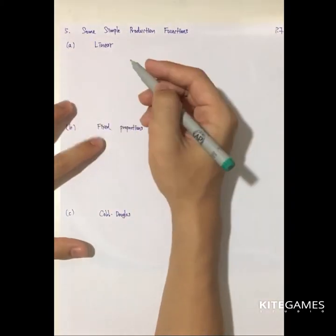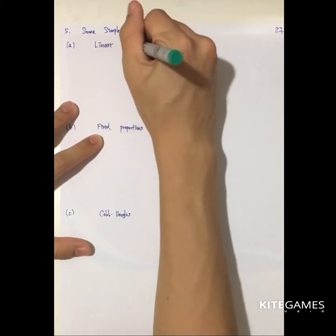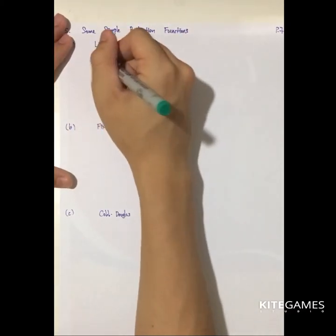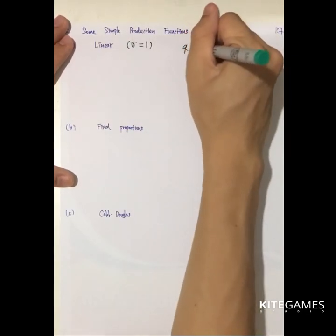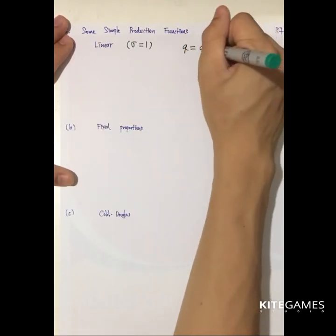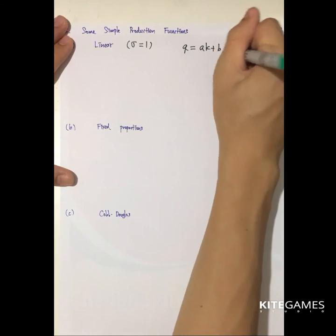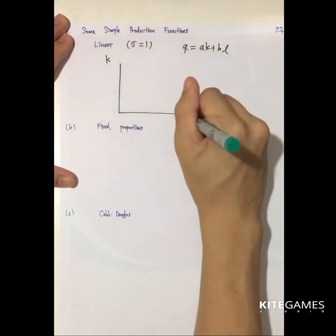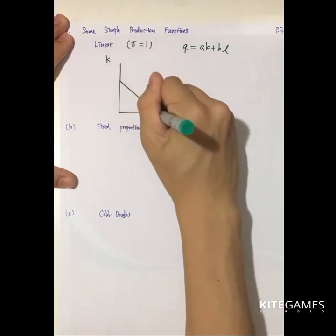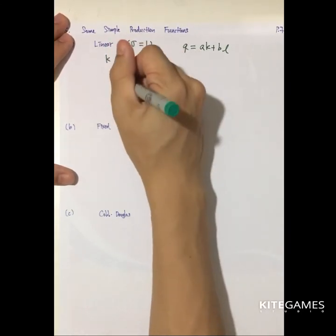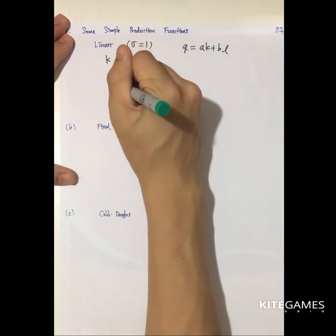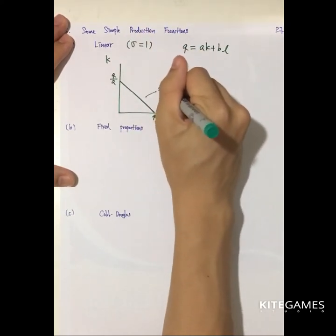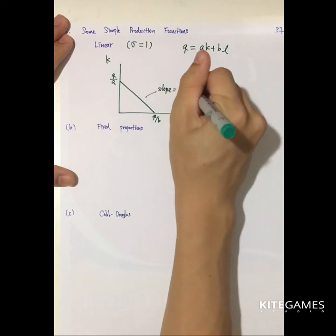The first one is the linear production function, with the elasticity of substitution equal to infinity — meaning k and l can be perfectly substituted for each other. The production function has the form q = ak + bl. If you draw the isoquant, it is a straight line with y-intercept q₀/a, x-intercept q₀/b, and slope b/a.